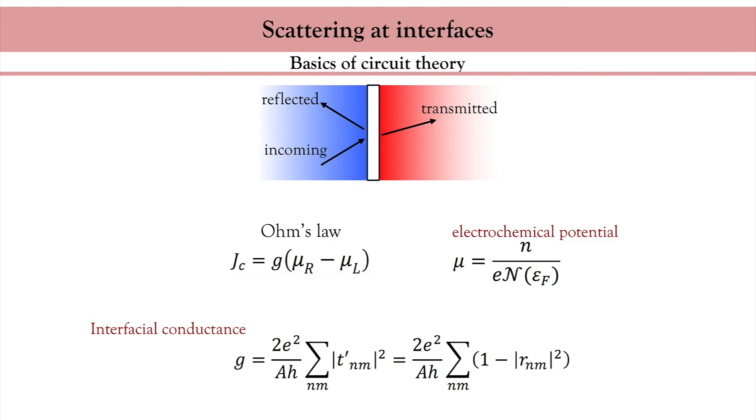So now we have everything we need to tackle spin transport. We have drift-diffusion theory to model the transport in metals and we have boundary conditions. This concludes the first part of this lecture. The take-home message is that the transport properties of transition metals are governed by S-D scattering — the scattering between the S and the D electrons. That's a very important remark, because the D electrons are the ones responsible for magnetism. In the next part, we are going to consider how the spin degree of freedom is transported through magnetic multilayers and how it gives rise to magnetoresistance.